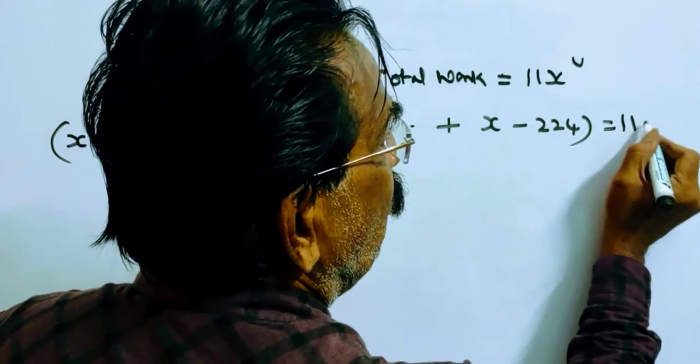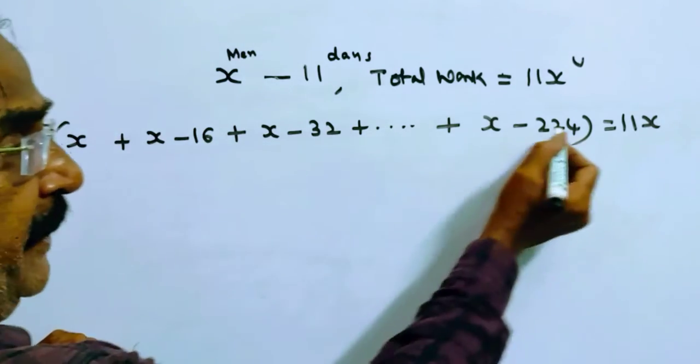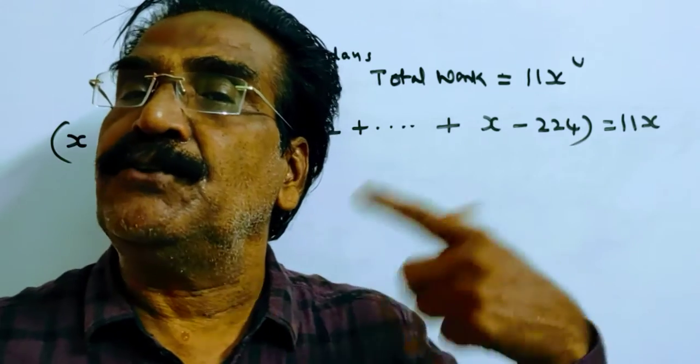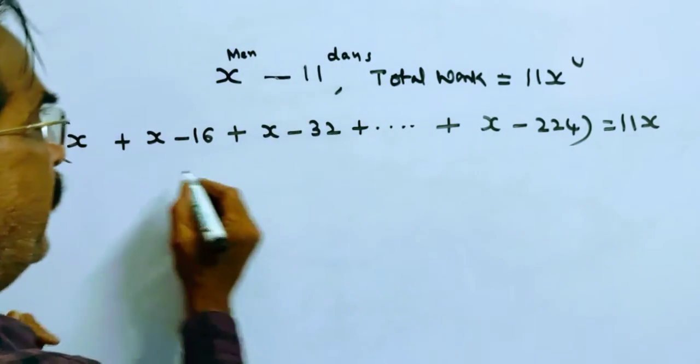This is equal to 11X units. See friends, this is an arithmetic progression where the sum of the terms is N by 2 into first term plus last term. N is 15.